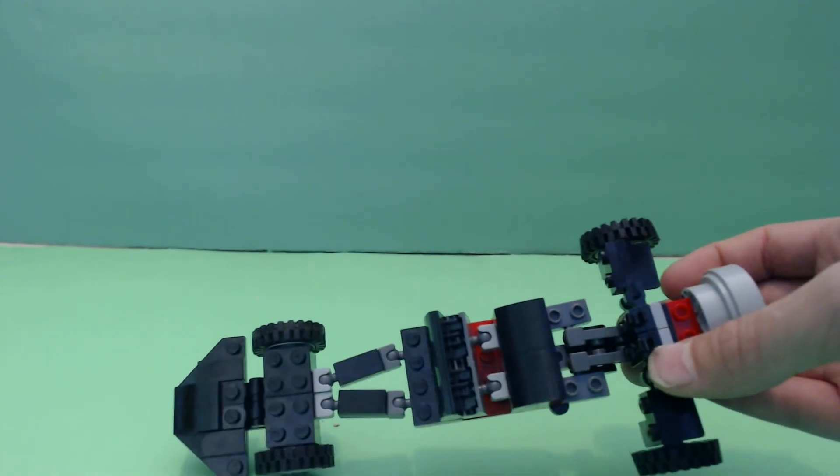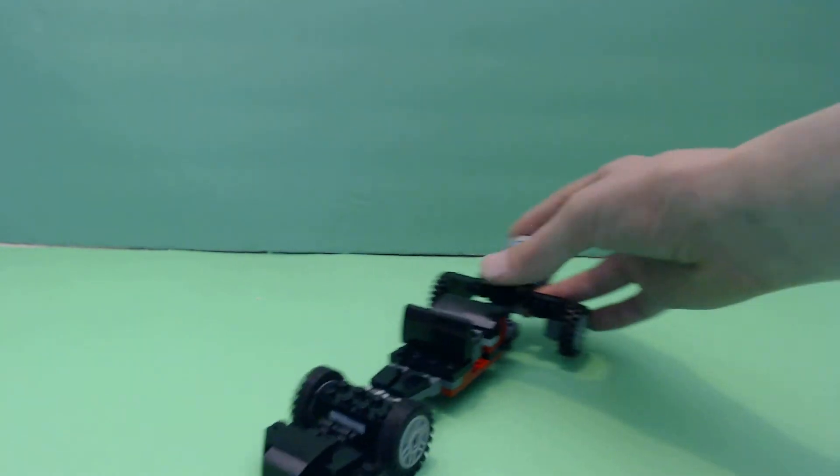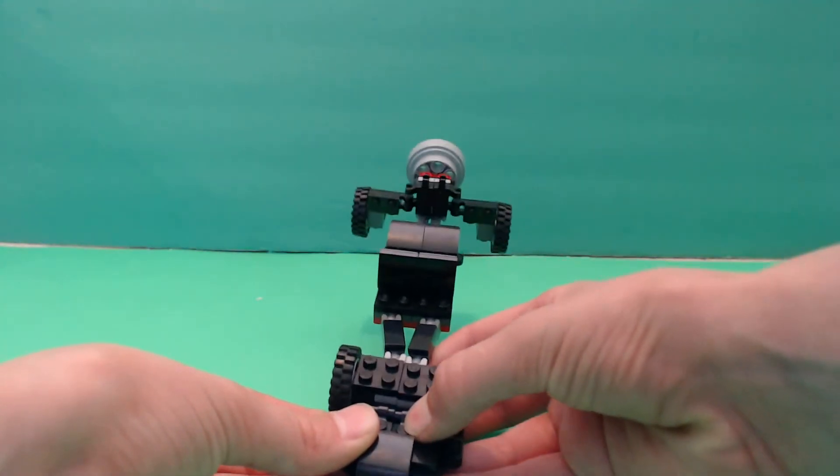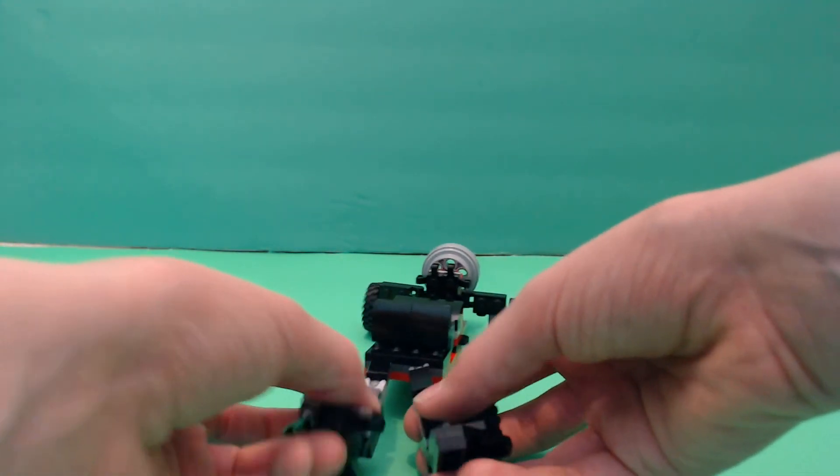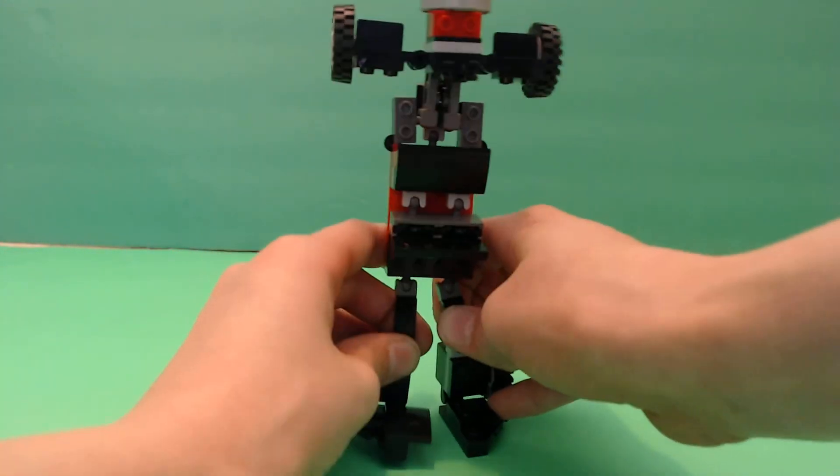You can kind of see how he transforms, but yeah, so let's do it. So the front's really easy, you just want to split it and fold those up, and those will become his legs.